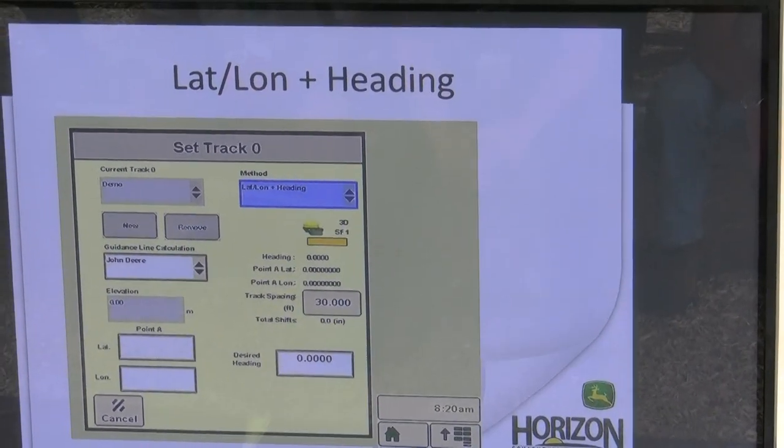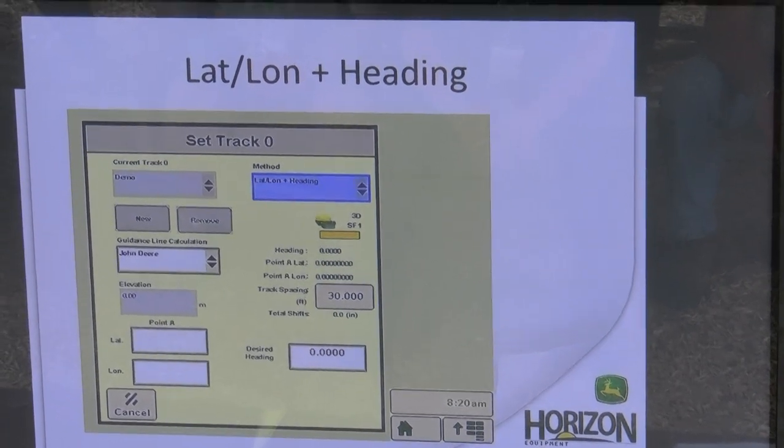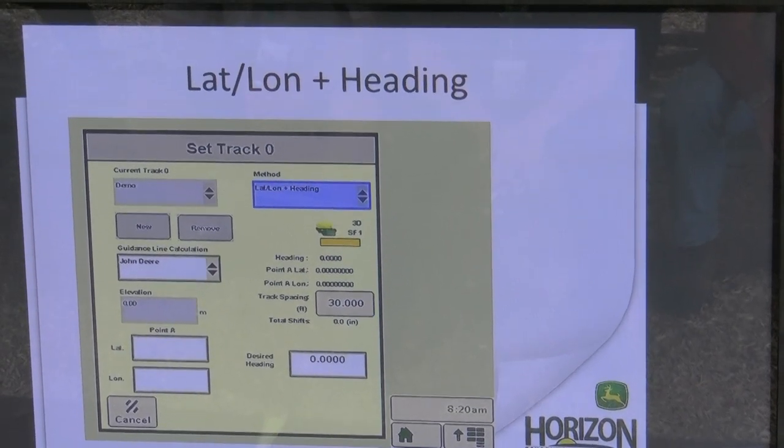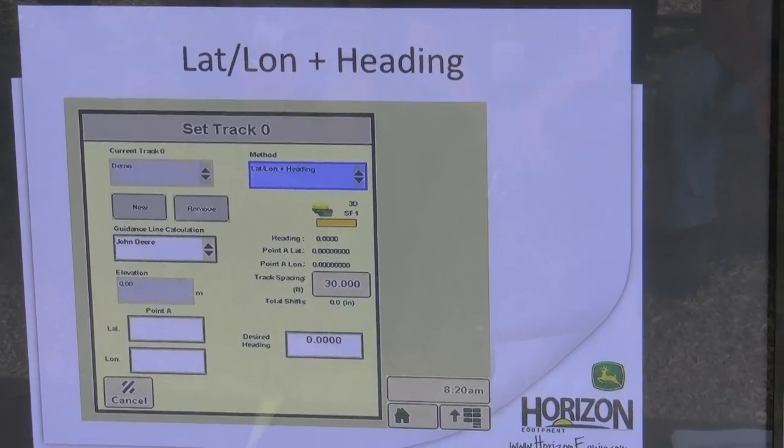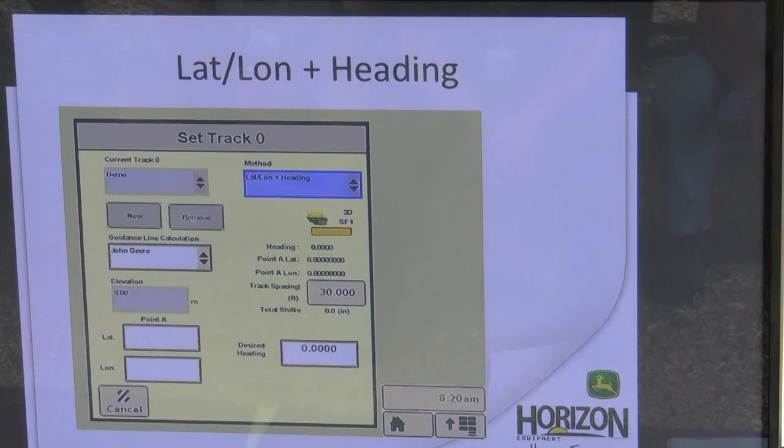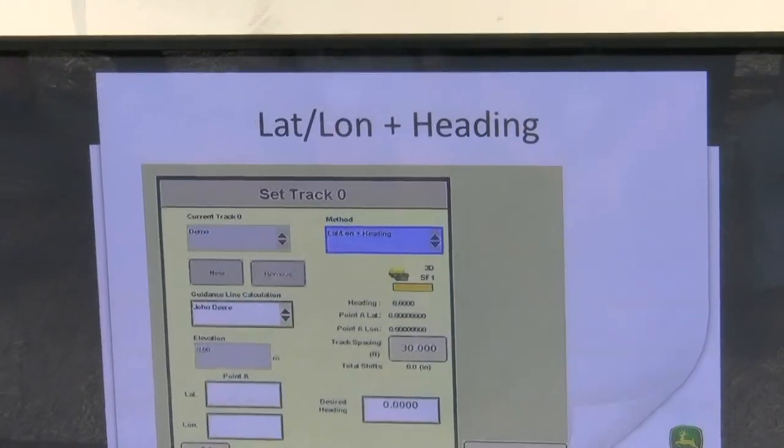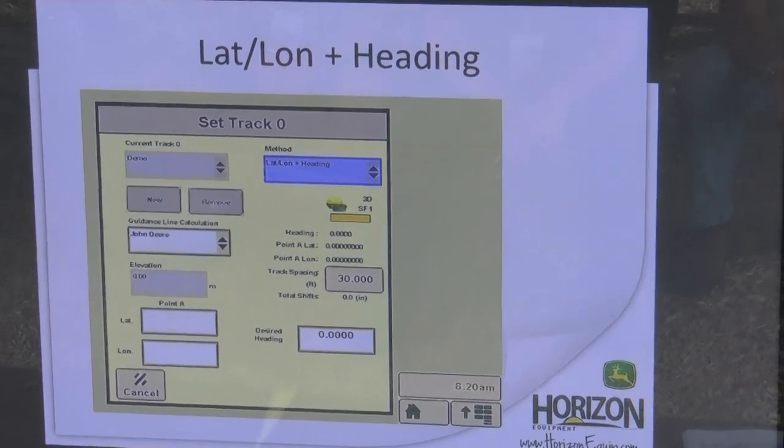That's what we did over there on our setup. We set up one guidance line with the machine, got all of our track spacings the same. I took my phone and took a picture of the screen, walked to every single one, popped them in, and I didn't have to barely start.